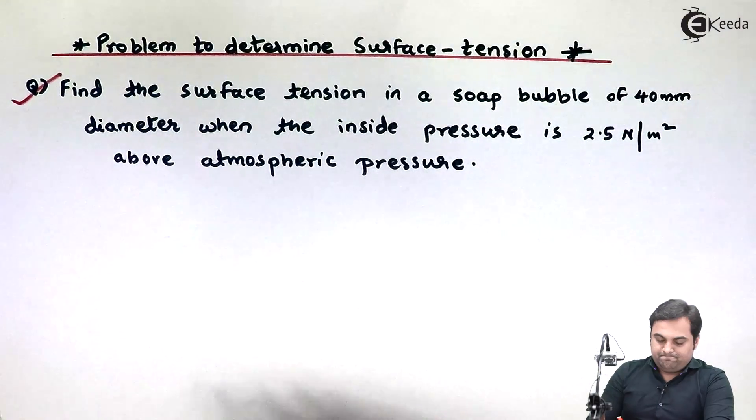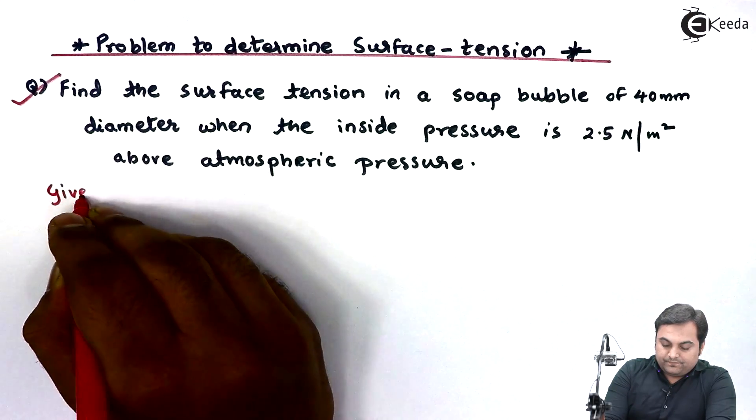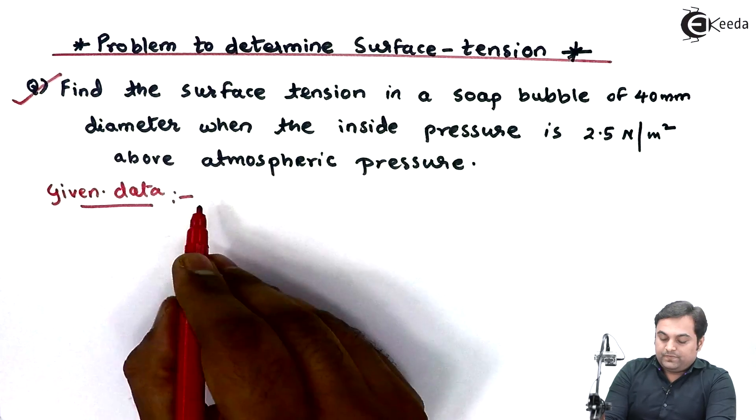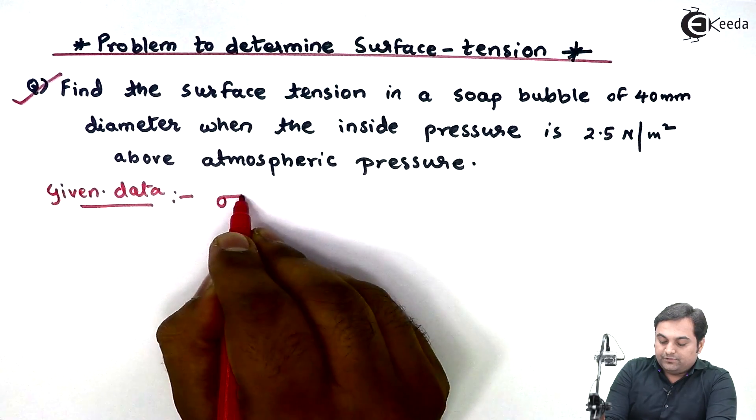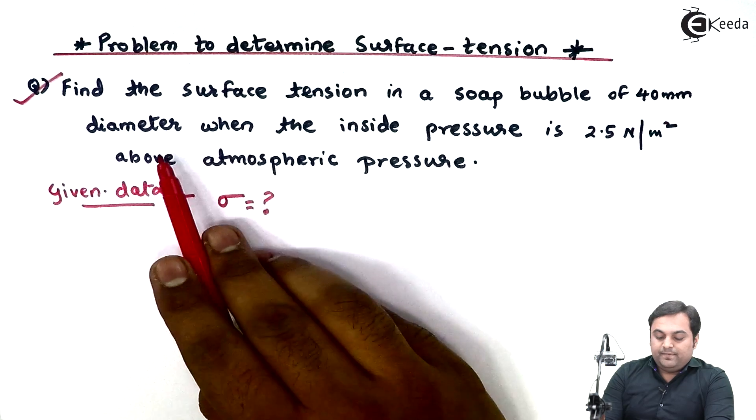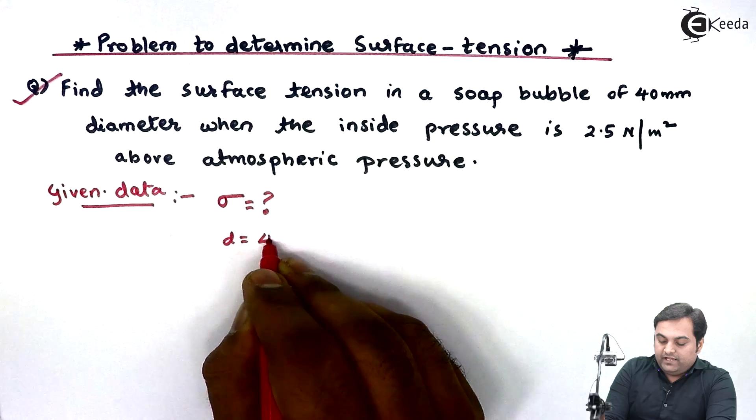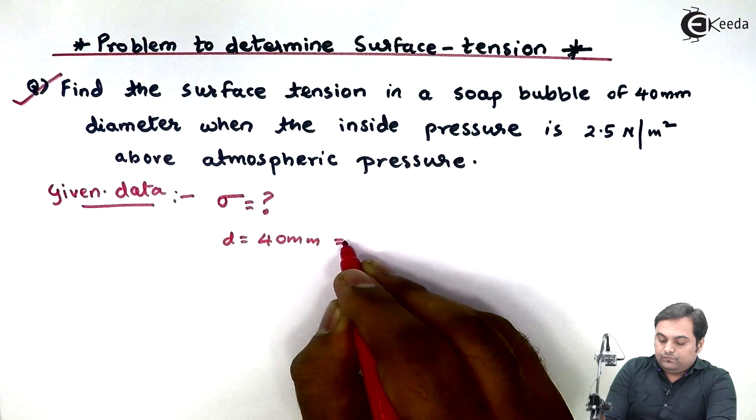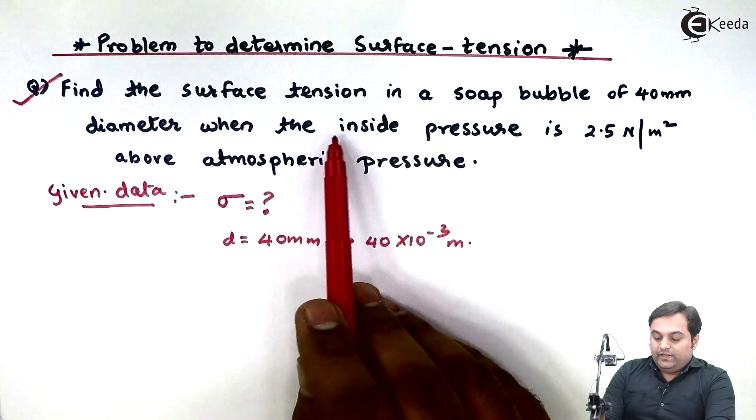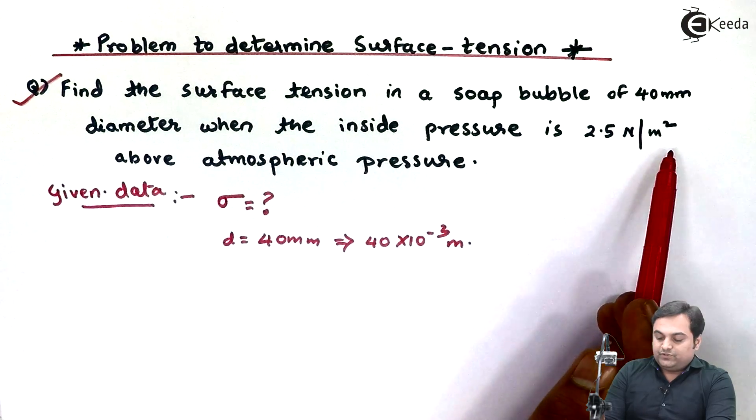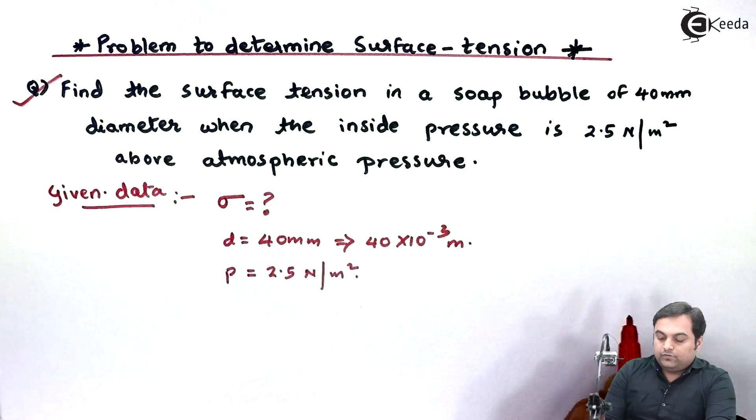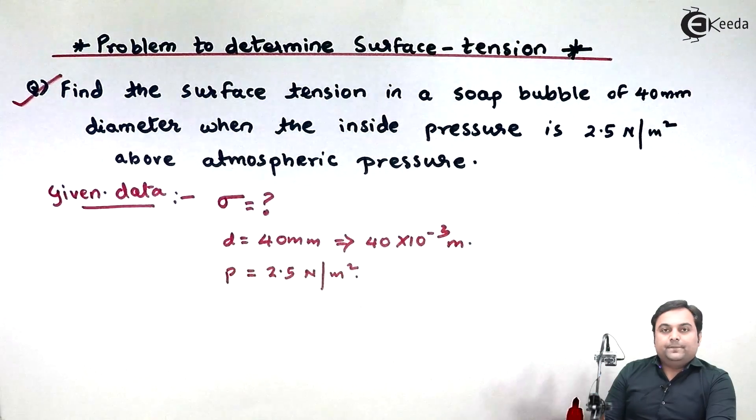Whatever is given in this question, I will write that in the form of given data. We have to calculate surface tension, which is denoted by Sigma. The diameter of the soap bubble is 40 mm, that is 40 into 10 raise to minus 3 meter. The pressure inside the soap bubble is 2.5 Newton per meter square above atmospheric pressure.